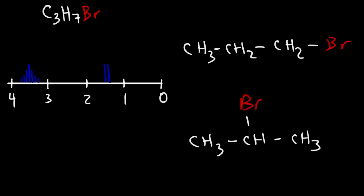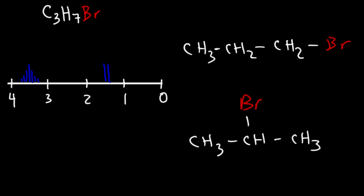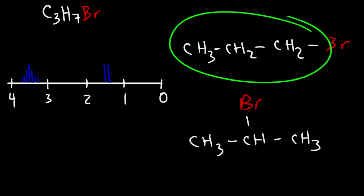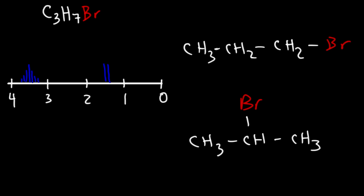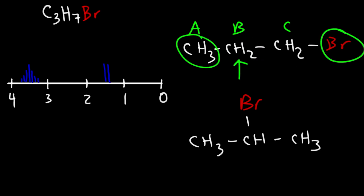2-bromopropane looks like an isopropyl group attached to a bromine atom. Now, looking at these two structures, which one corresponds to the NMR spectrum? The simplest way is to count the number of signals. For 1-bromopropane, we have proton A, proton B, and proton C — three different types of protons, each in a different chemical environment. The protons closer to the bromine atom are in a different environment than those in the methyl group.